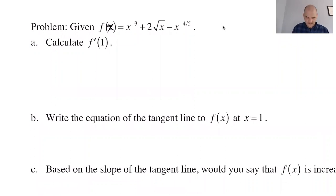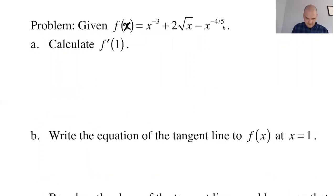We want to find f prime of 1. Well first we're gonna find f prime of x. Before I do that, there's one little step I got to do because I see a radical and radicals are the worst. So f of x is x to the negative third plus 2x to the 1/2 minus x to the negative 4/5.